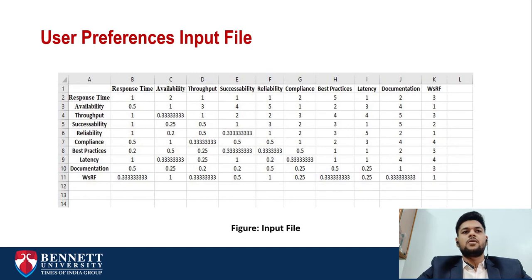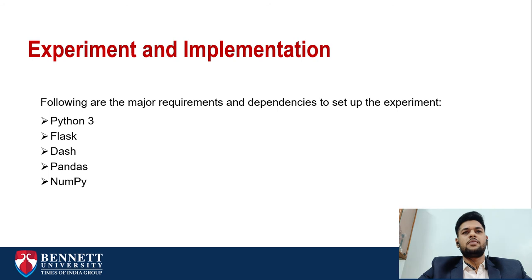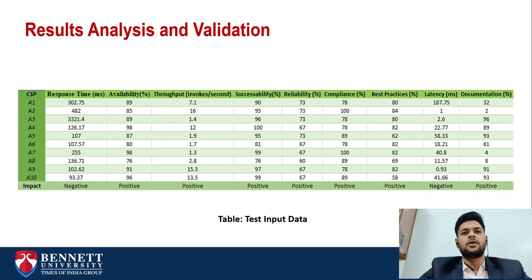Here is how a user preference input file looks — it's a square matrix with 10 by 10 columns. Here is a glimpse of the user interface; I will provide a detailed demonstration towards the end of the video. For the experiment and implementation, the major requirements and dependencies to set up the experiment are Python 3, Flask, Dash, Pandas, and NumPy.